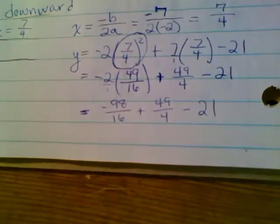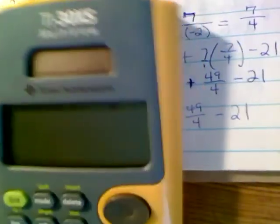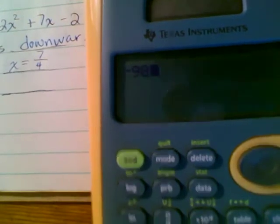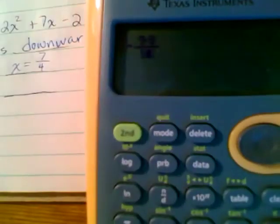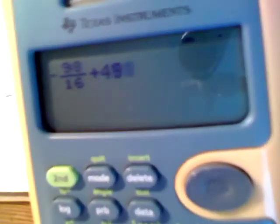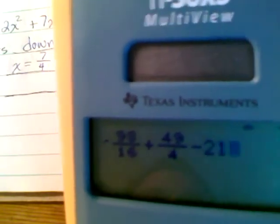And I am okay if you just go to the calculator from here. So here's my calculator. I love this calculator. TI-30XS multi-view. Basically, what I'm going to do is I'm just going to type in negative 98. I'm going to use this fraction bar here, negative 98 over 16. Now, I push this arrow button out here. Negative 98 over 16 plus 49 over 4 minus 21. Now, I push enter.